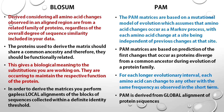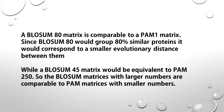The choice of which matrix to use depends on the goals of the investigator. A BLOSSOM-80 matrix is comparable to a PAM-1 matrix, since BLOSSOM-80 groups 80% identical proteins and corresponds to a smaller evolutionary distance. A BLOSSOM-45 matrix would be equivalent to PAM-250. So BLOSSOM matrices with larger numbers correspond to PAM matrices with smaller numbers.